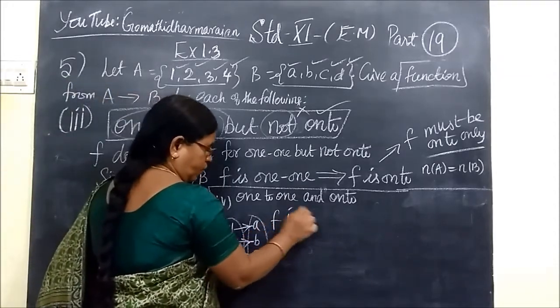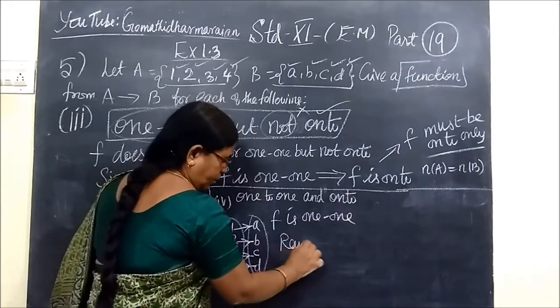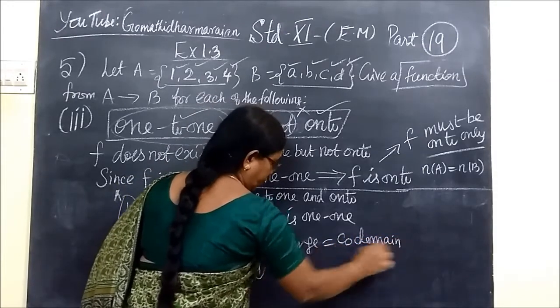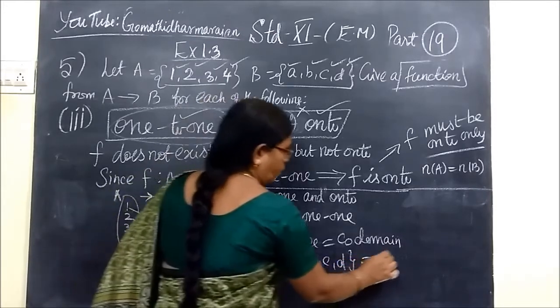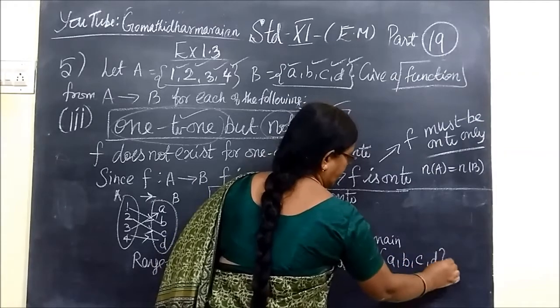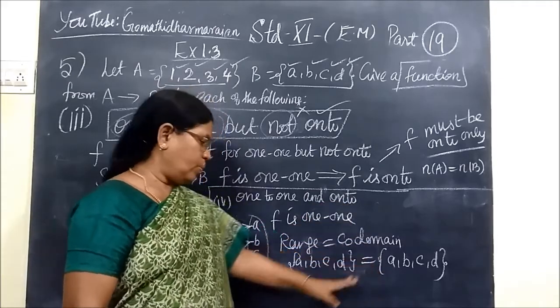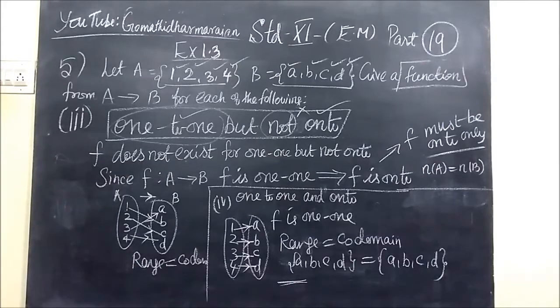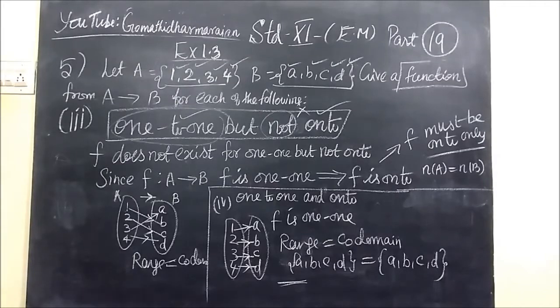So this here f is 1-1 and onto. So let's see here. So it is range codomain.